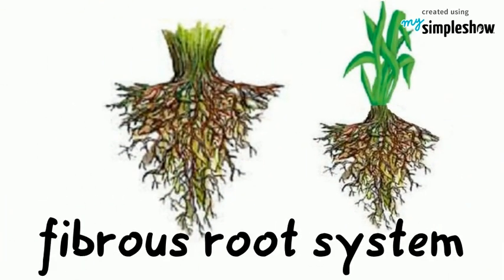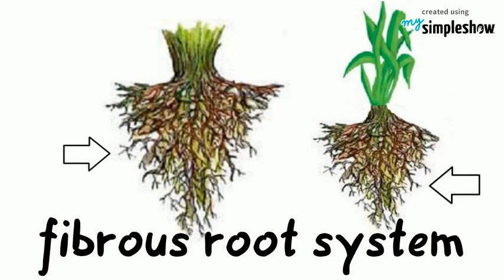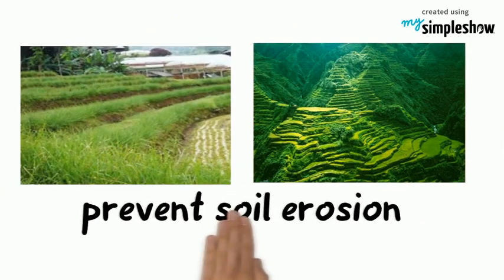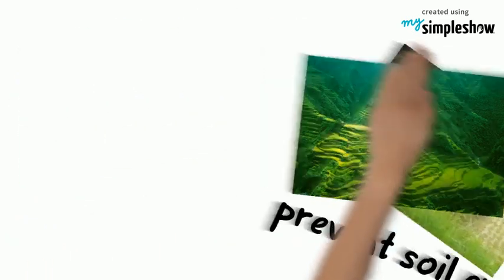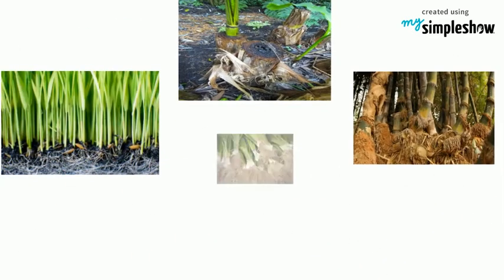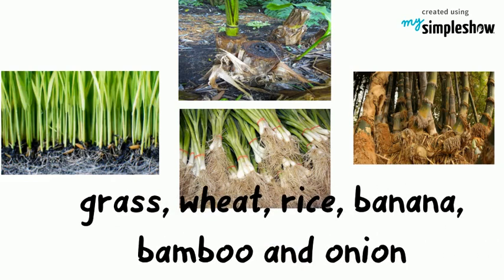Second is the fibrous root system. It consists of many small roots and is located closer to the soil surface. The root system is thick and shallow, where it helps prevent soil erosion. Examples of plants that have a fibrous root system include grass, wheat, rice, banana, bamboo, and onion.